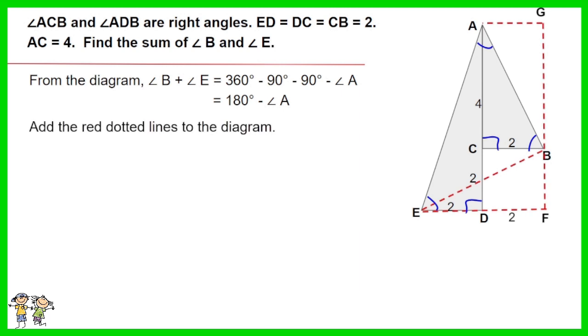Add the red dotted lines to the diagram. Triangle ABG and ABF are identical. Thus angle ABG plus angle ABF equals 90 degrees and angle ABE equals 90 degrees.